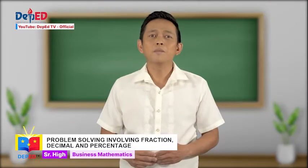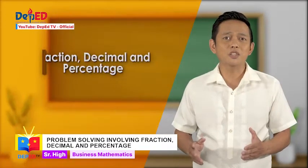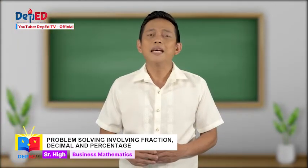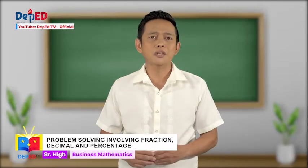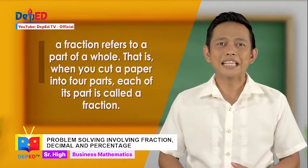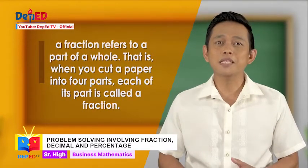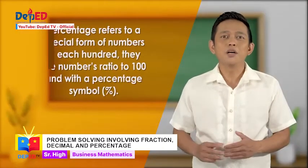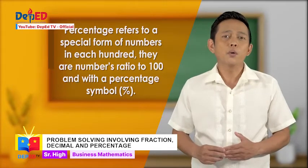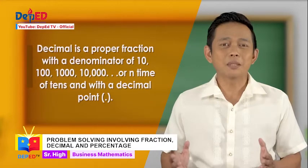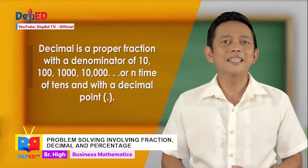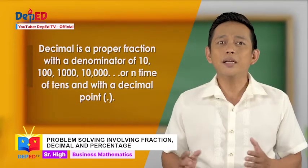Previously on our last episode, we learned about the concepts of fraction, decimal, and percentage. We also discussed the conversion of fraction to decimal, decimal to percentage, and percentage to fraction, and vice versa. Recall that a fraction refers to a part of a whole — when you cut a paper into four parts, each part is called a fraction. Percentage refers to a special form of numbers in each hundred, with a percentage symbol. Decimal is a proper fraction with the denominator of 10, 100, 1000, 10,000, or any power of ten, with a decimal point.